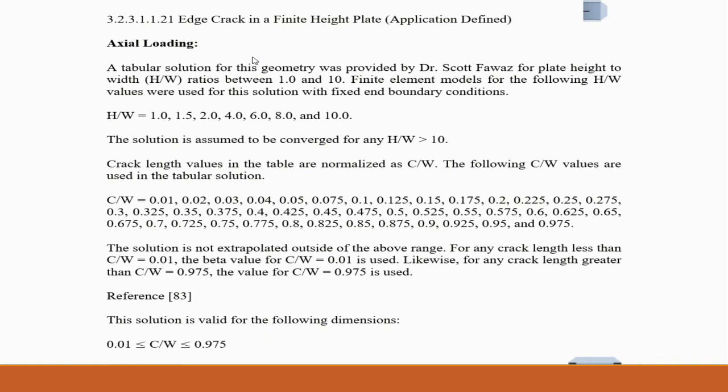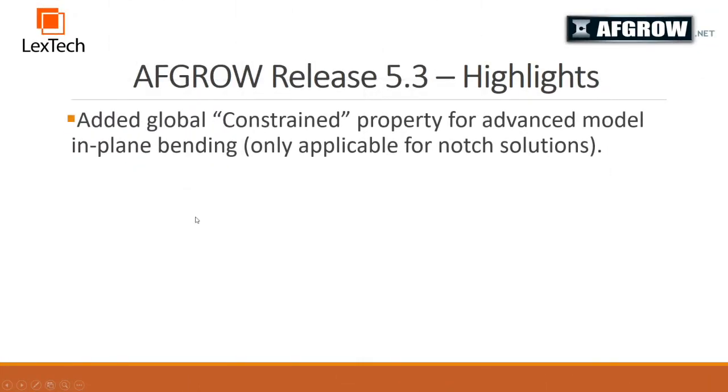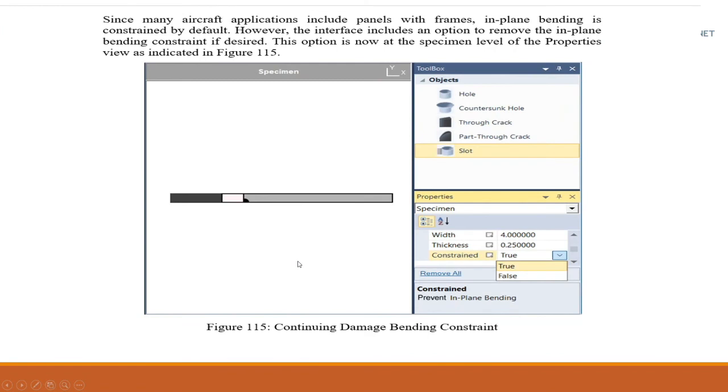The solution is only valid for dimensions C over W greater than or equal to 0.01 and less than or equal to 0.975. We have also added the global constraint property for the advanced models for in-plane bending. Even though you have the option to select true or false in other solutions for the advanced model, this only works for the slot solution.